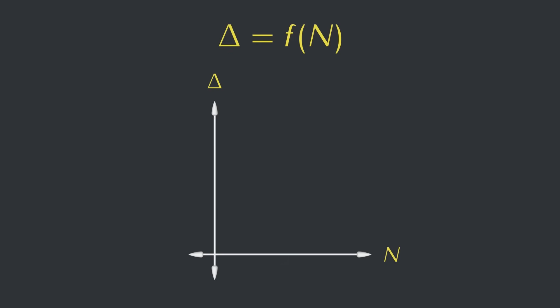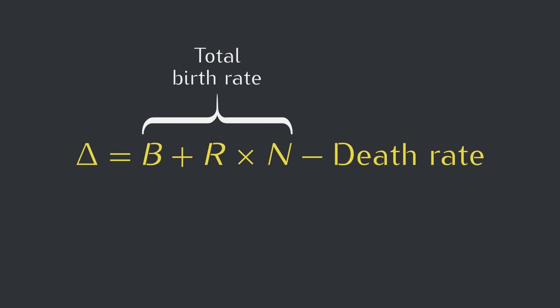We did this in the last video, but let's run through it again. We can break the total birth rate into the spontaneous birth rate, which we're going to get rid of later, plus the replication rate, which is the chance of a single creature to replicate at a given time, multiplied by the total number of creatures.